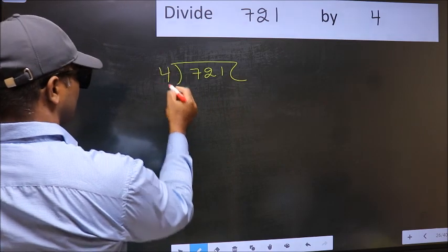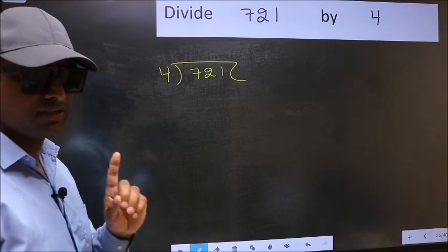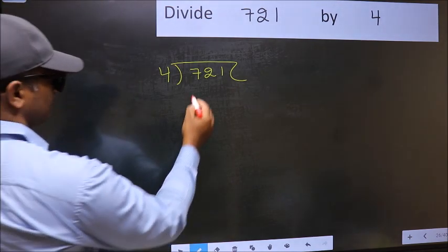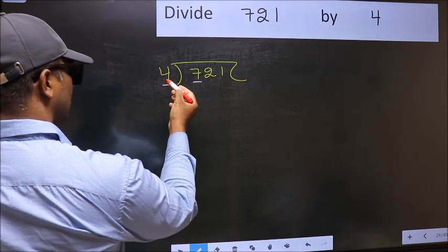And 4 here. This is your step one. Next, here we have 7 and here 4. A number close to 7 in the 4 table is 4 times 1 equals 4.